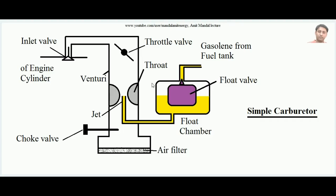Let's learn what the different components of a carburetor are. Here is a schematic indicative diagram of a carburetor. This is the float chamber, as I'm showing with this arrow. Inside it there is a float valve — I will tell you the job of this valve and this float chamber. You can see there is an inlet to this float chamber; the gasoline comes from the petrol tank and ultimately reaches first this float chamber.